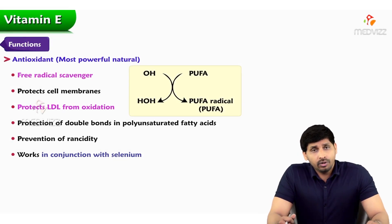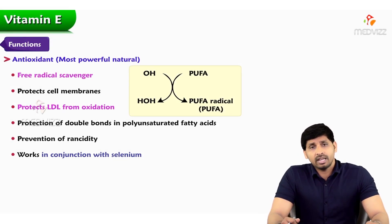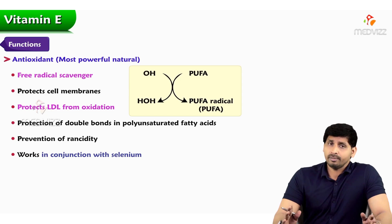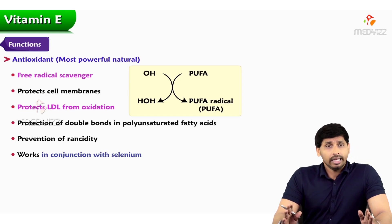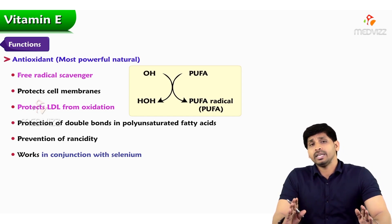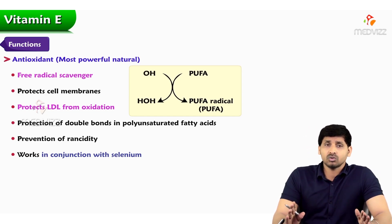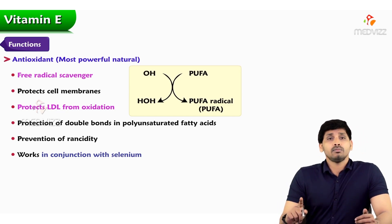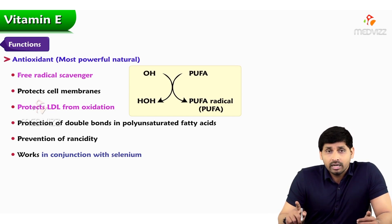Hello everyone. In this video, we will be talking about the functions, deficiency, and manifestations of vitamin E. So the main function — vitamin A means healthy vision, vitamin D means healthy bone metabolism and calcium homeostasis — vitamin E means antioxidant function, that means fighting with the free radicals. So the main thing about vitamin E is it is the most powerful natural antioxidant.